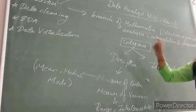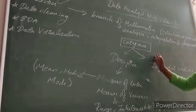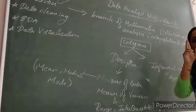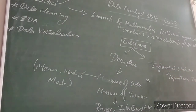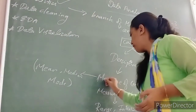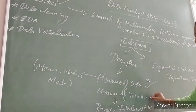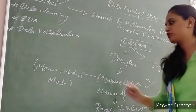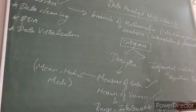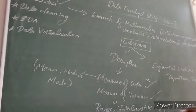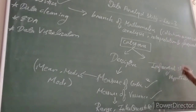After this, we study categories of statistics. If we categorize, we have two parts according to your syllabus. First one is descriptive and second one is inferential statistics. Descriptive is divided into two parts: first is measure of center, and second is measure of variance. Measure of center includes mean, median, and mode. Measure of variance includes range, interquartile, variance, and standard deviation. After that, inferential statistics includes hypothesis testing.